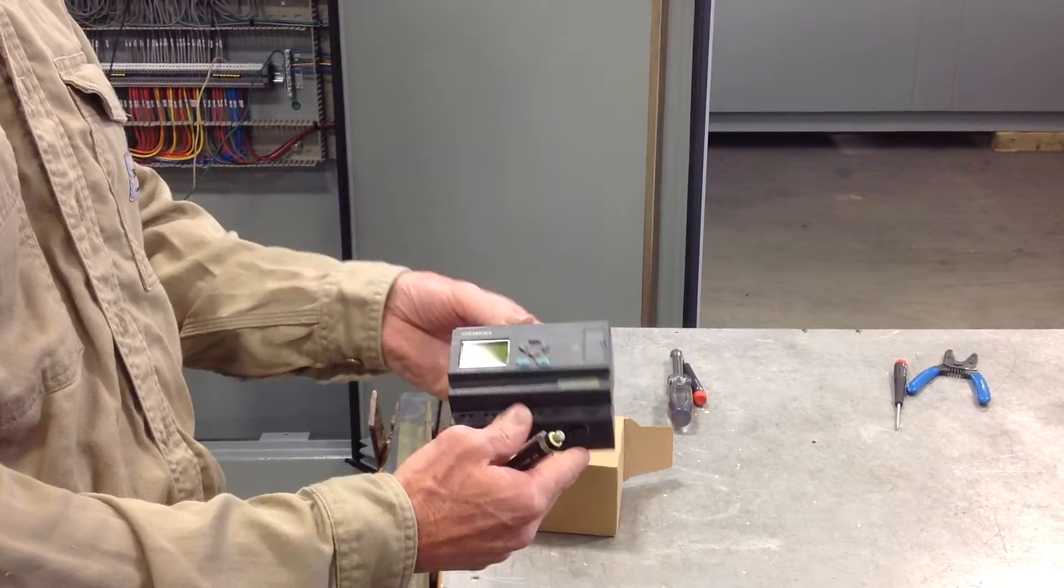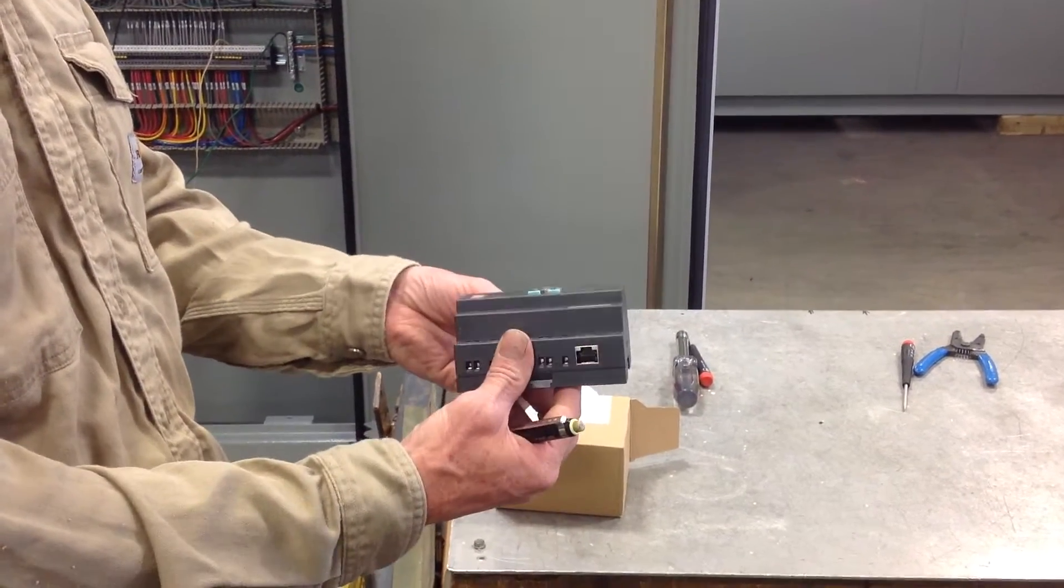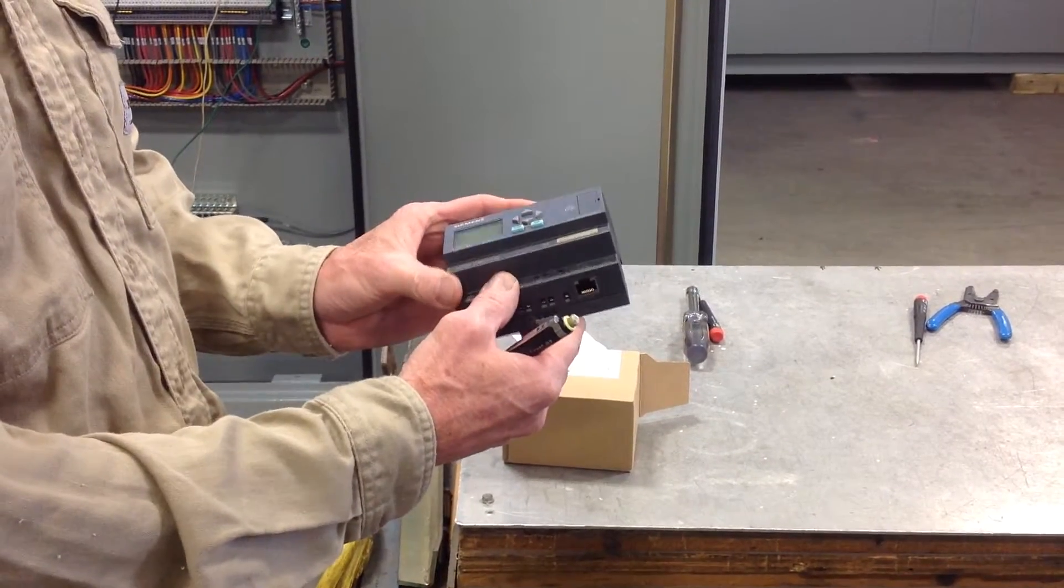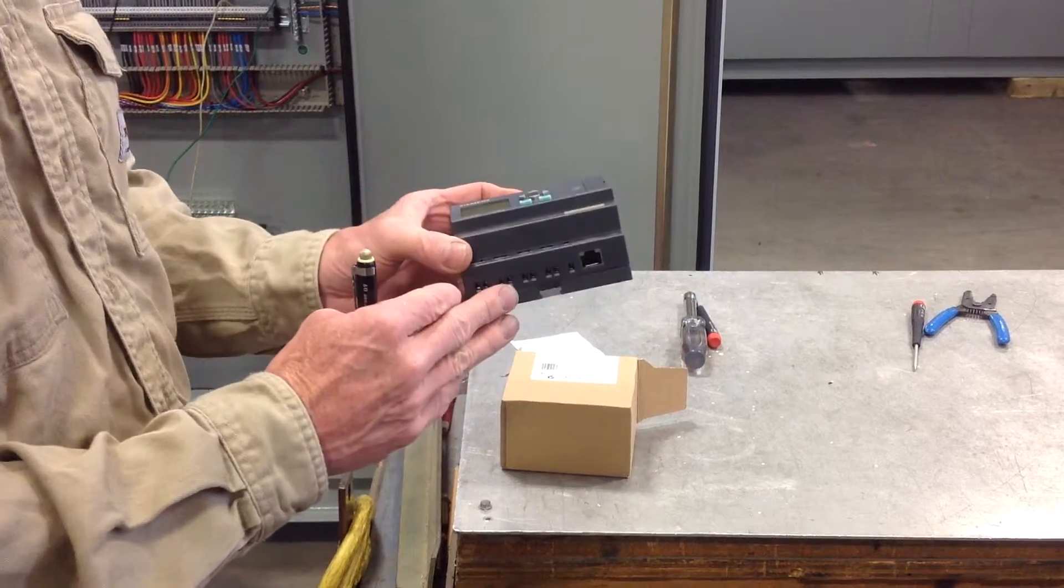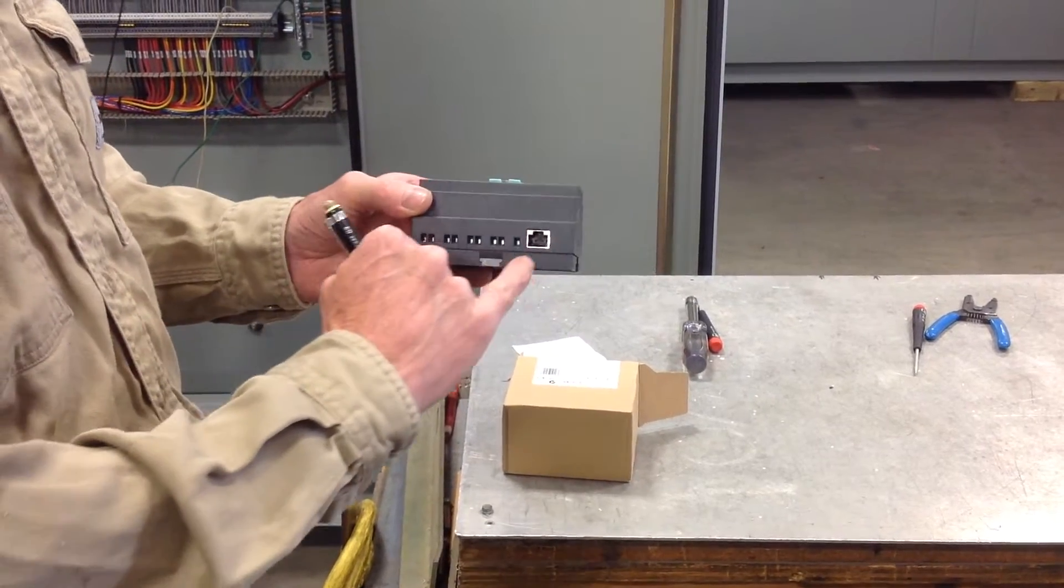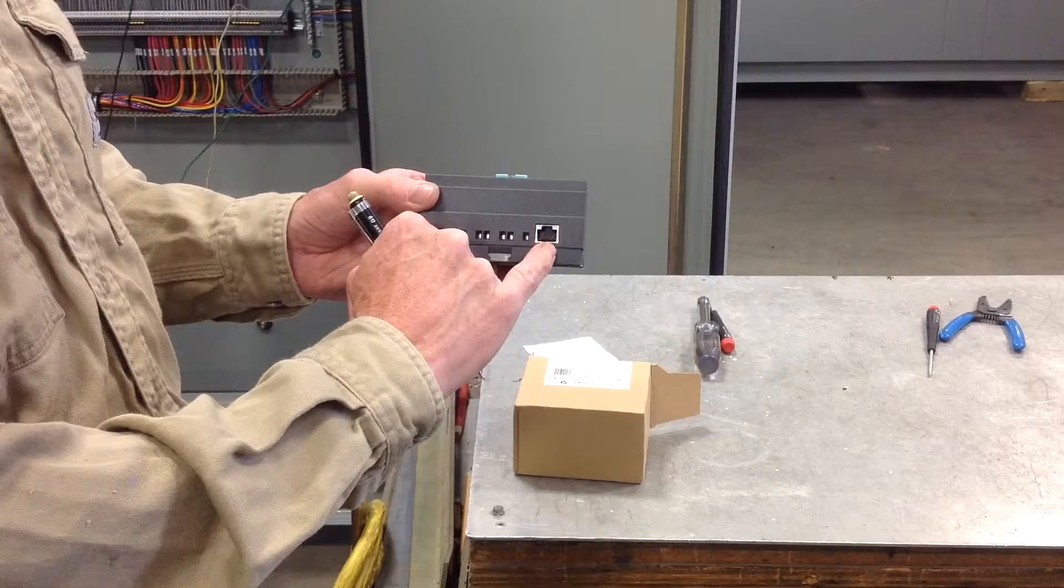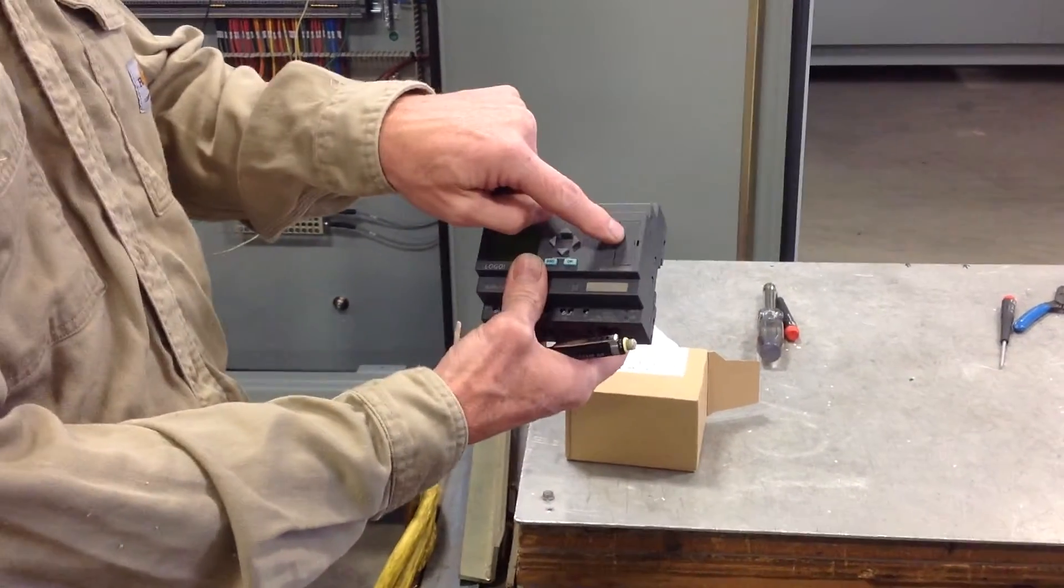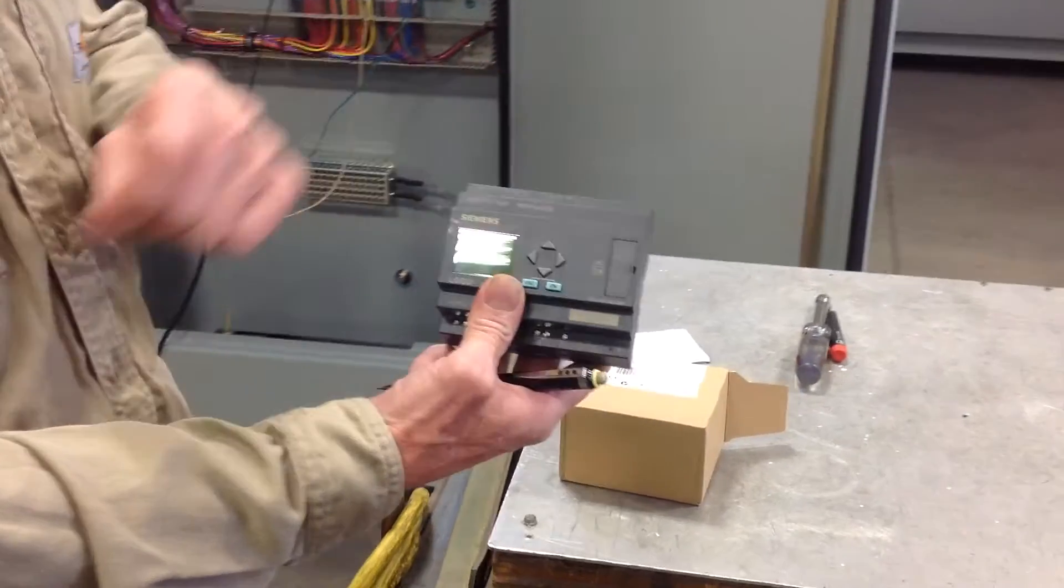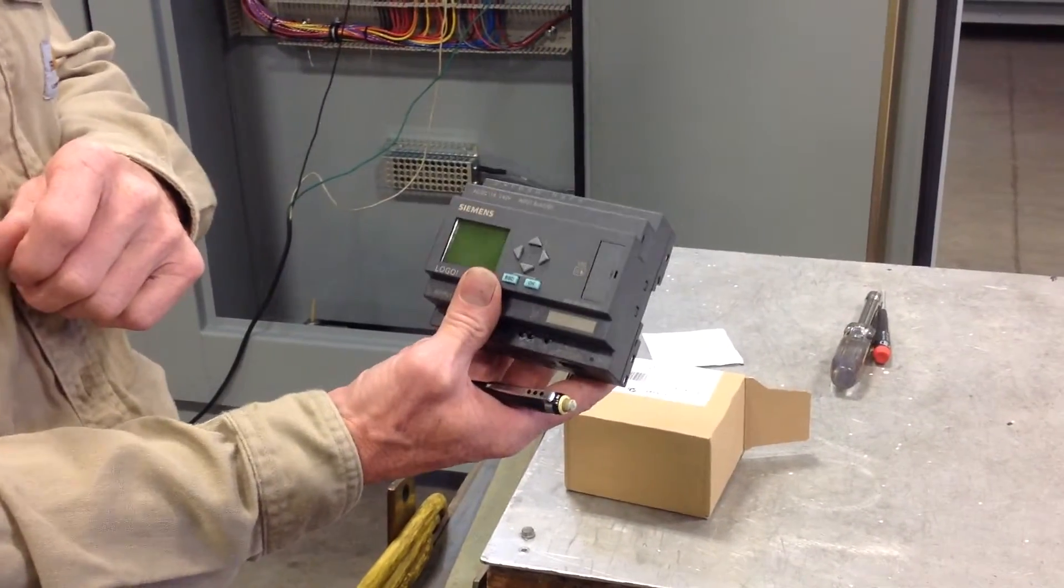This is what the main module looks like and there's different versions, but the newest version, the ones we've been using for a couple of years now, has an Ethernet port RJ45 connection and it also has a port that receives an SD card.